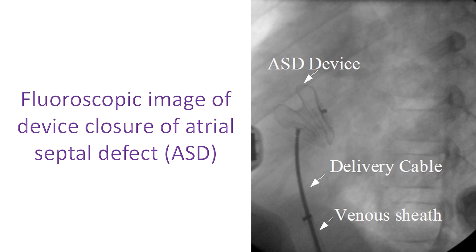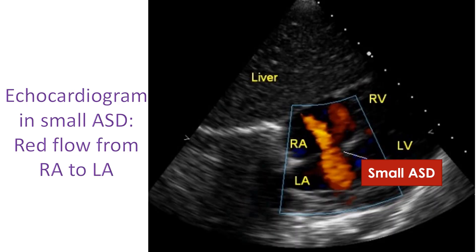A detailed echocardiogram will decide the need and suitability for procedures. This image shows an atrial septal device positioned for release across an ASD. Small defects will not cause pulmonary hypertension and are left alone, except in the case of a PDA, where even small defects will be closed as the procedural risk is low.